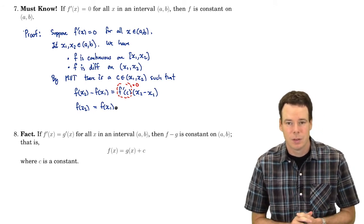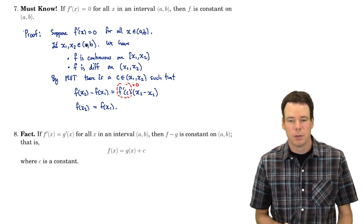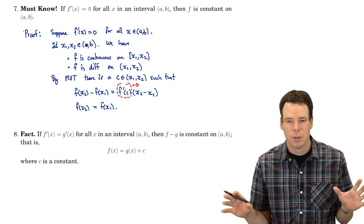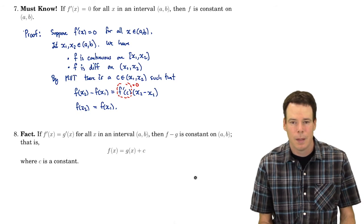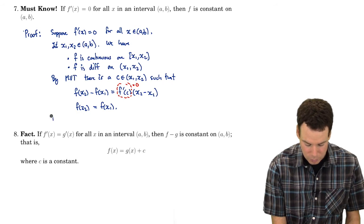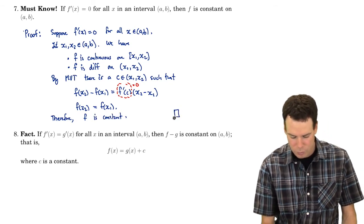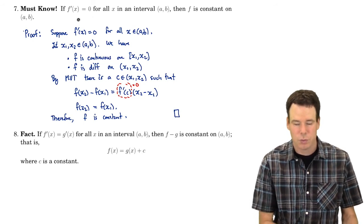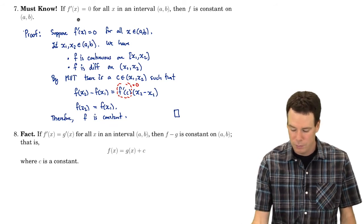Since x1 and x2 were any values in the interval (a,b), and we showed they must have the same function value, the function has the same value at all points in that interval. Therefore f is constant, and that's the end of our proof. From the mean value theorem we've shown: if a function has derivative 0 on an interval, it must be a constant function on that interval.